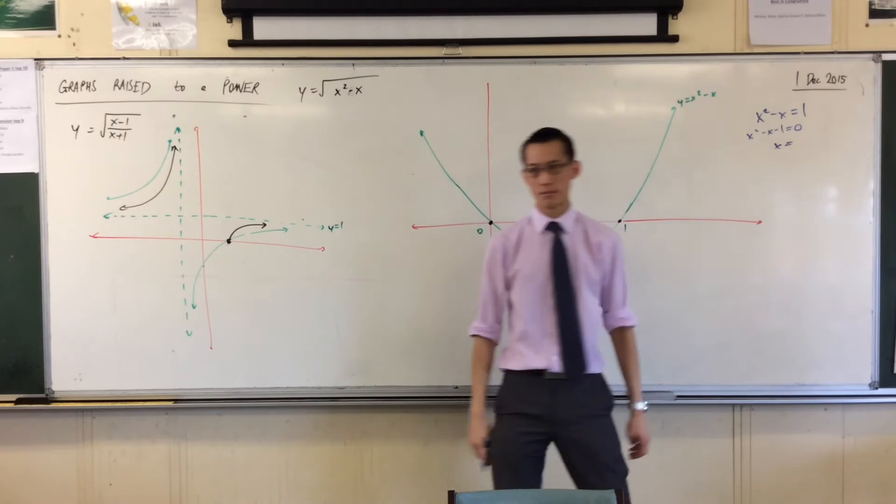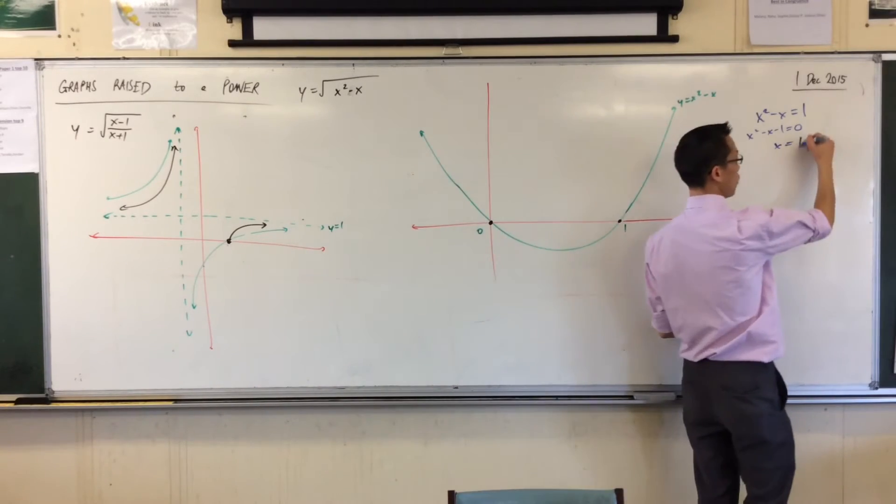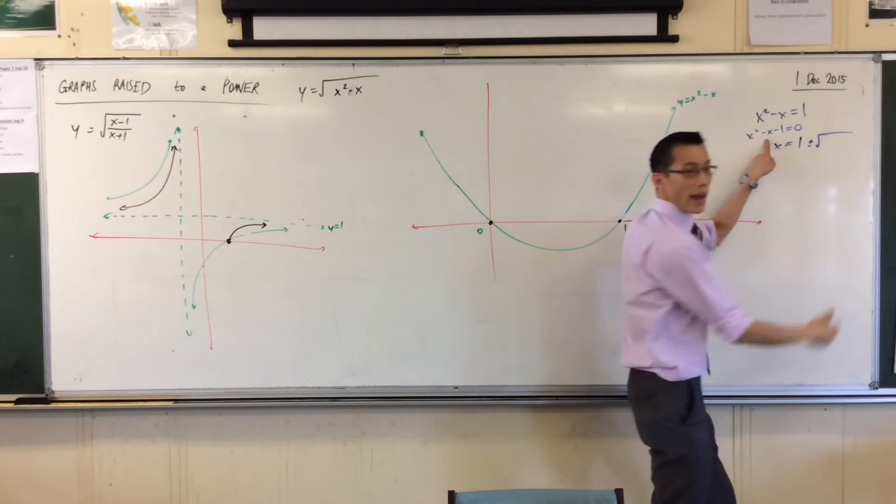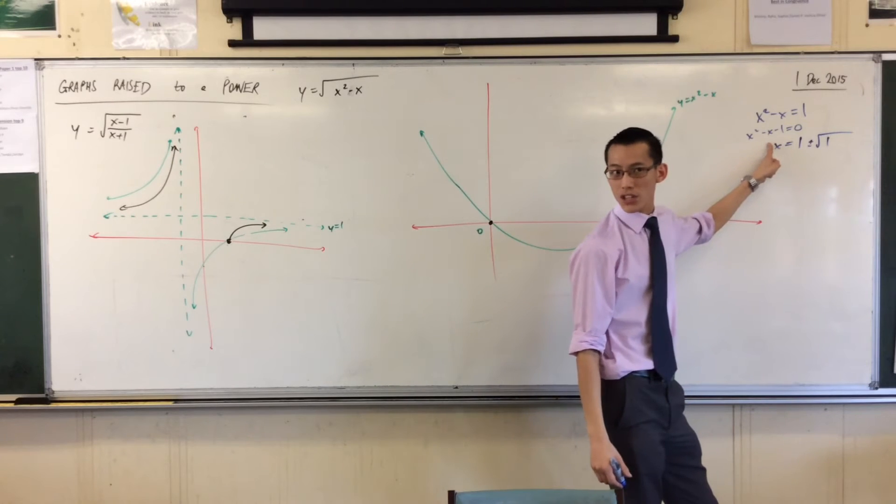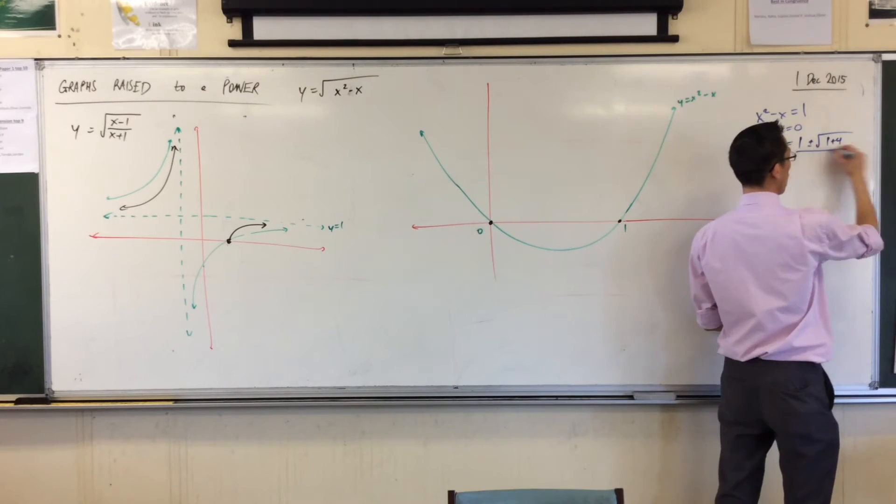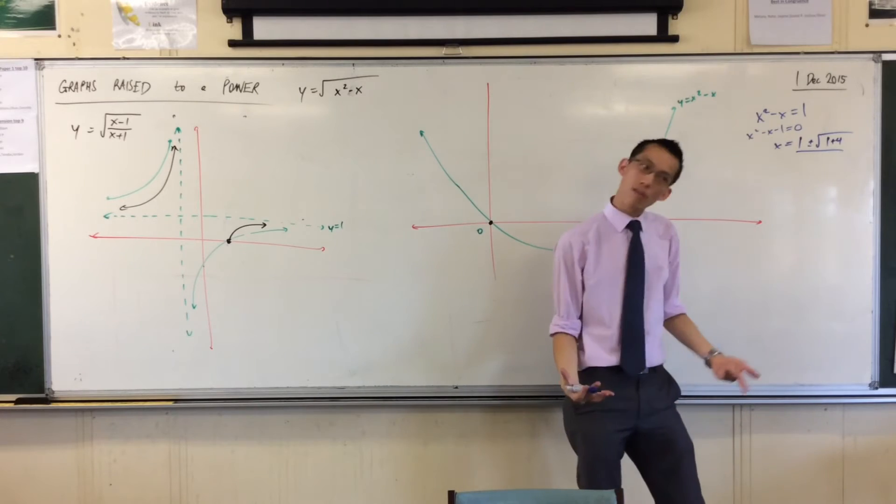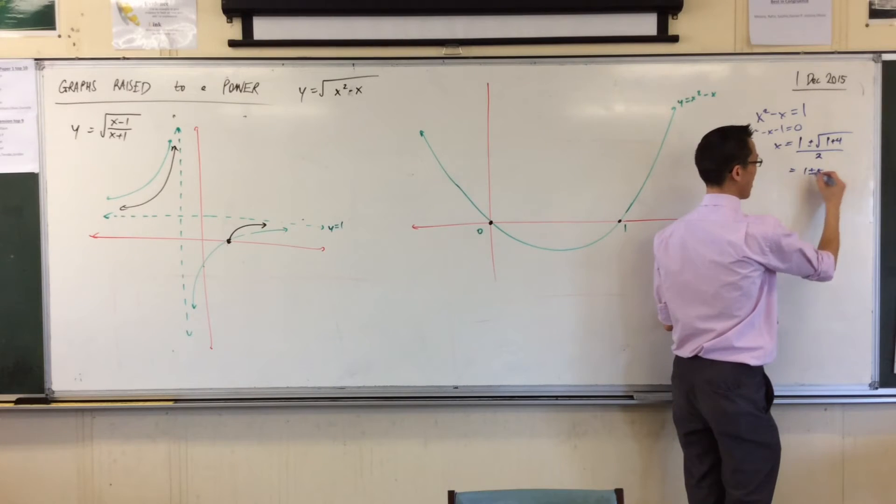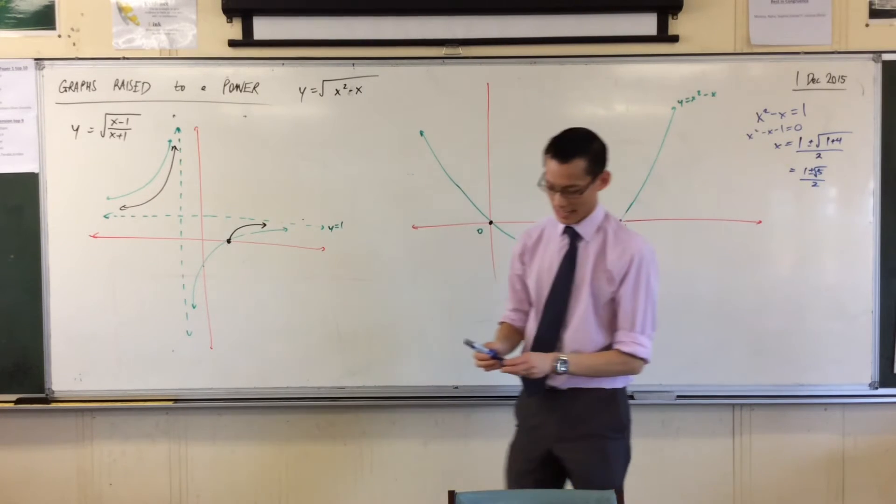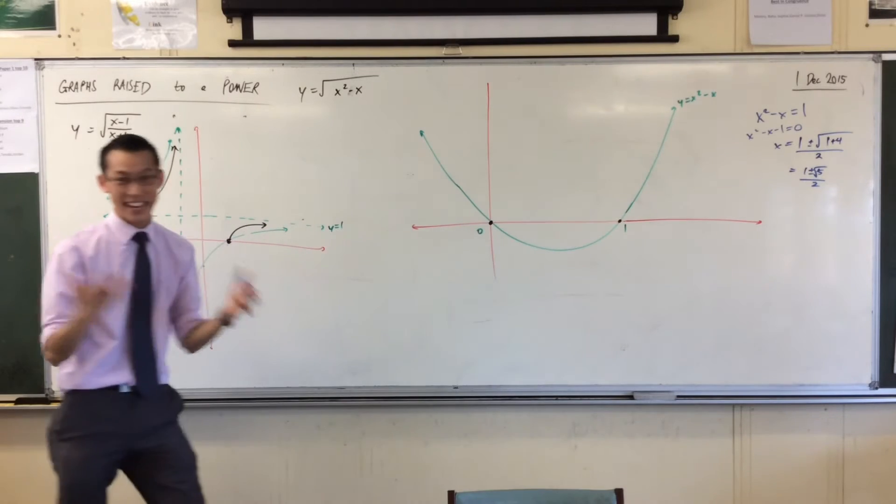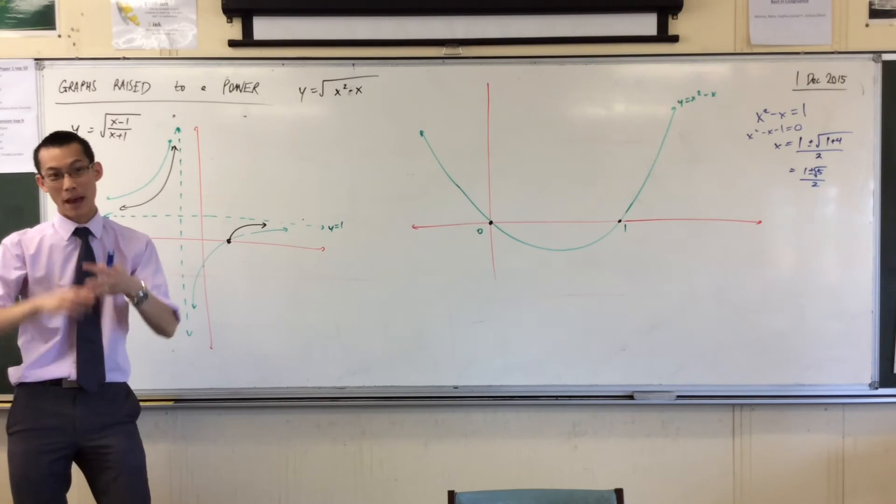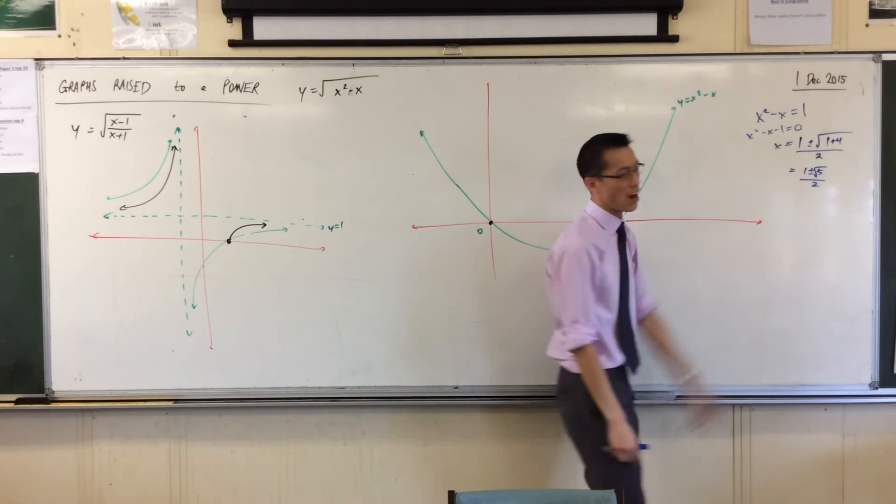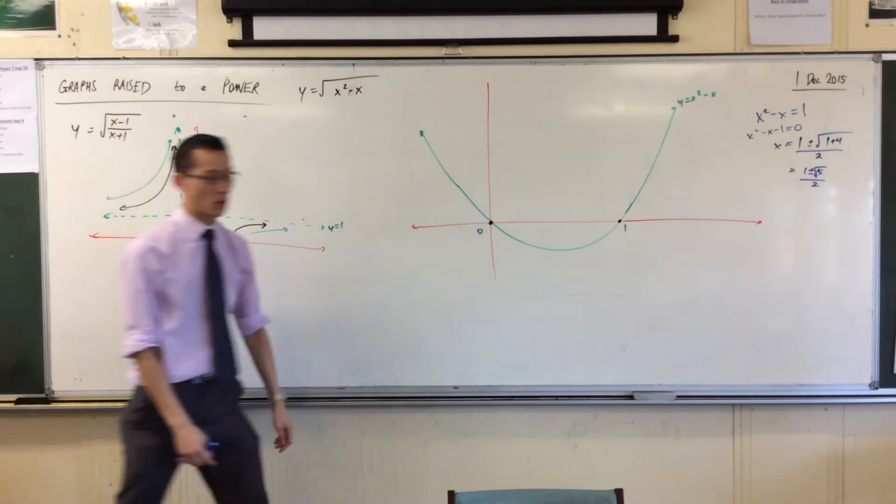x equals minus b, which is 1, plus or minus the square root of b squared, which is 1, minus 4ac, which is plus 4, all over 2a, which is 2. Now, this is really important to me, because this number is so important. It gets given—you guys remember how I said things get named in proportion to their significance, how many people use them, how broadly it's used. The positive case of this, 1 plus the square root of 5 on 2, is a number called the golden ratio.